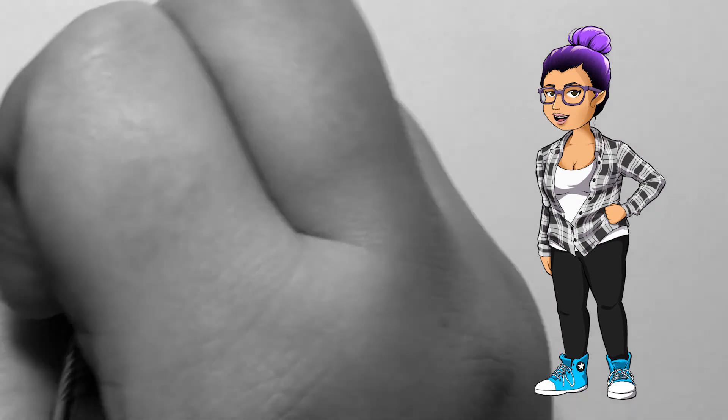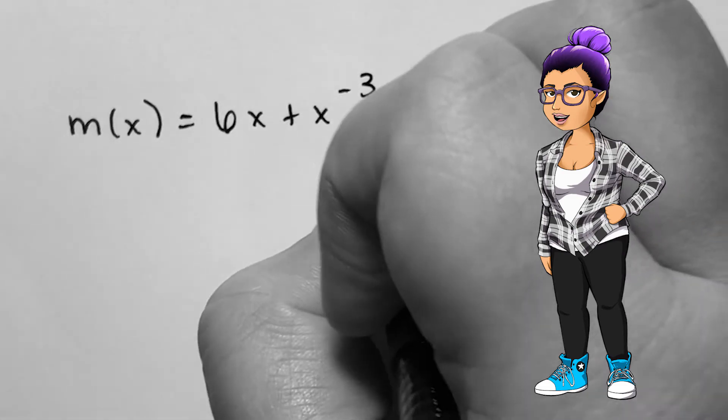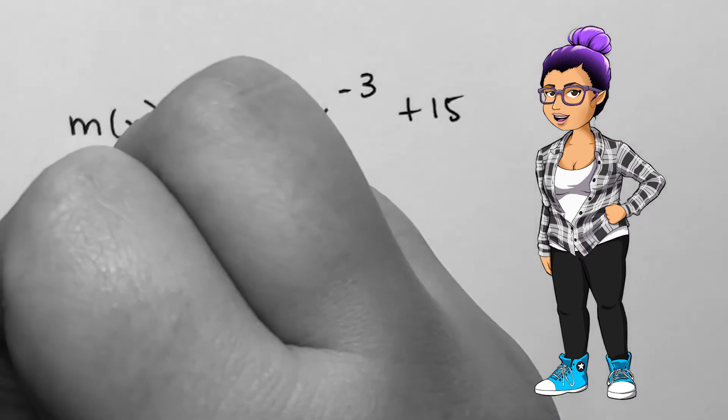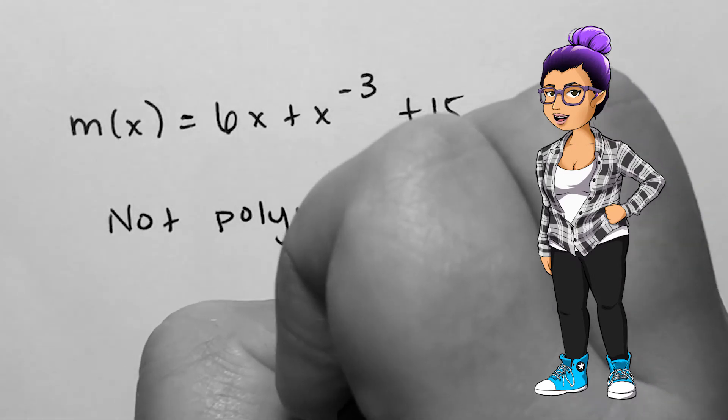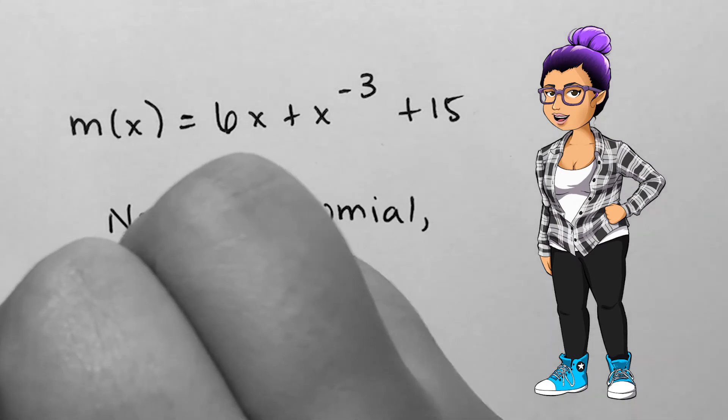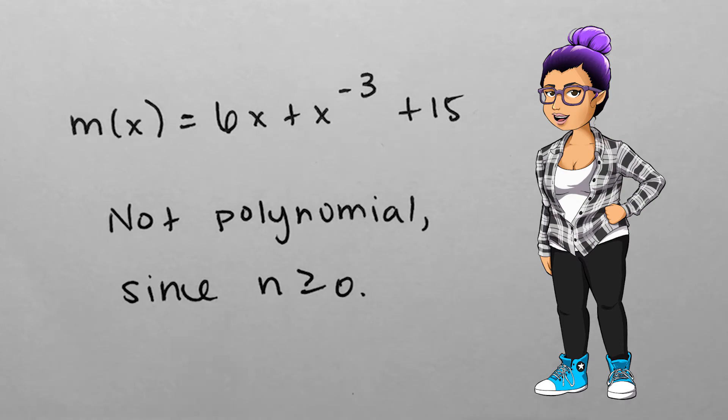If m of x is 6x plus x to the negative 3 power plus 15, we are looking at some version of a to be discussed rational function, but not a polynomial. There is an exponent on the variable that is an integer, but is also negative, which isn't allowed according to the definition.